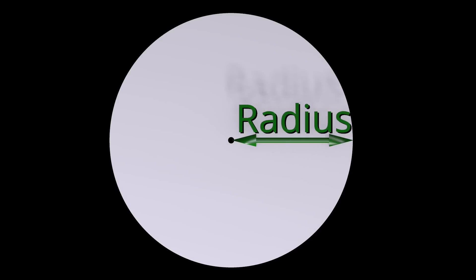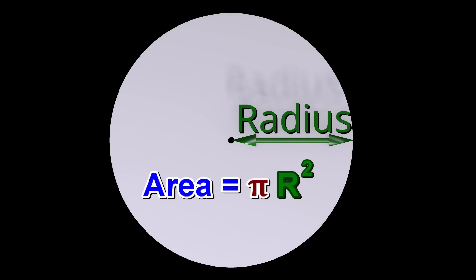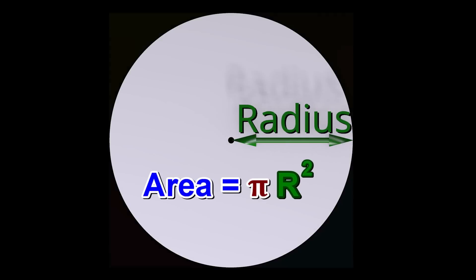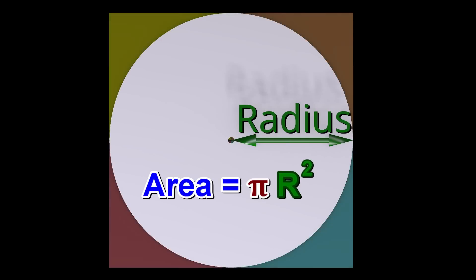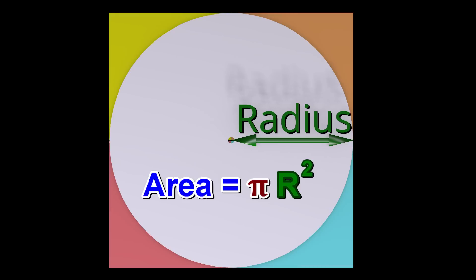In this video, we will explain why the area of a circle is exactly equal to pi multiplied by the radius squared.